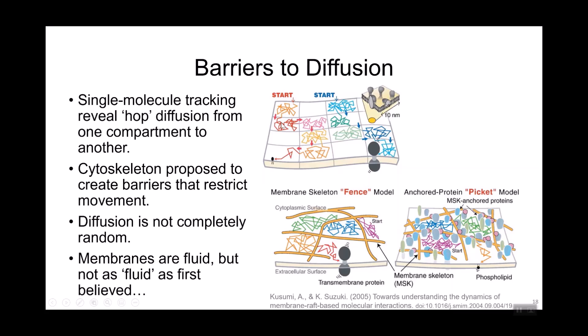There are barriers that restrict the diffusion of lipids and proteins within the plane of a membrane, observable through single molecule tracking experiments, where molecules are seen restricted to one region and then hopping to another. The presence of the cytoskeleton acts like barbed wire under the membrane — this is known as the fence model. Other membrane proteins that span across both layers can act like pickets in a fence, restricting the movement of proteins and lipids. When a molecule hops from one region to another it's like finding a gate in the fence. This observation has led to modification of Singer and Nicholson's fluid mosaic model — membranes really aren't as fluid as first thought.